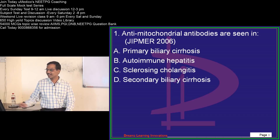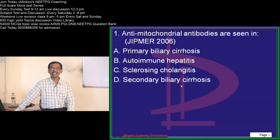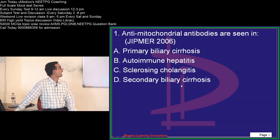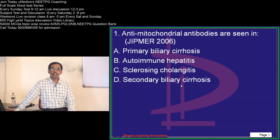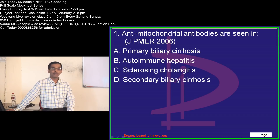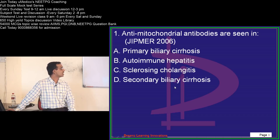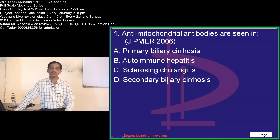Let us get started with the first question from 2006. Antimitochondrial antibodies are seen in: primary biliary cirrhosis, autoimmune hepatitis, sclerosing cholangitis, or secondary biliary cirrhosis.